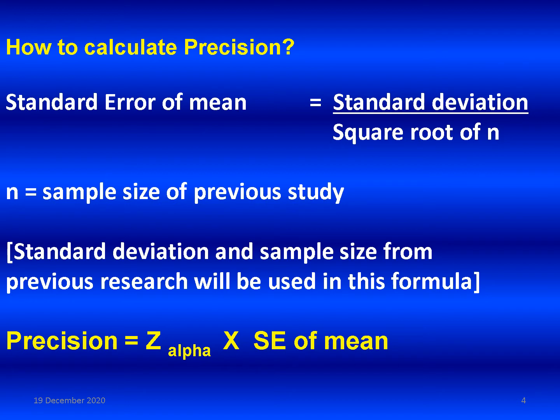Precision is equal to Z alpha multiplied by standard error of mean. Z alpha is a standard normal variate — 1.96 for a 95% confidence interval — multiplied by the standard error of mean.